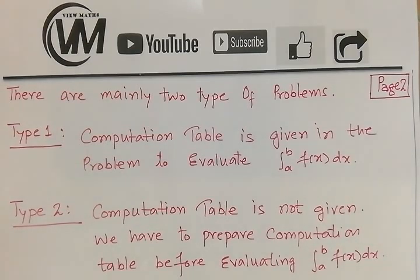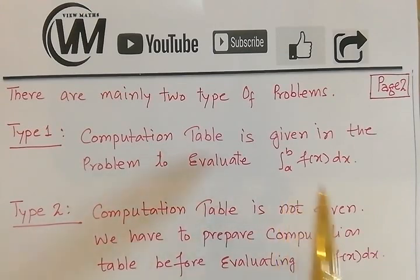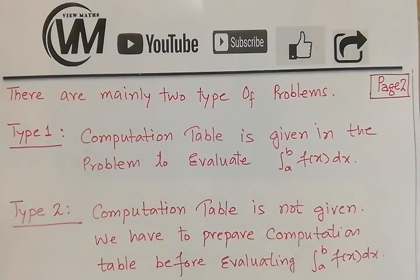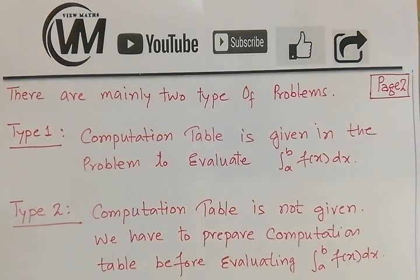There are mainly two types of problems in Simpson's 3/8 rule. In Type 1, a computation table is already given in the problem and you substitute values directly into the formula. In Type 2, the computation table is not given, so you must first prepare it from the given data before evaluating the integral. This extra step of constructing the computation table is the additional work required in Type 2.